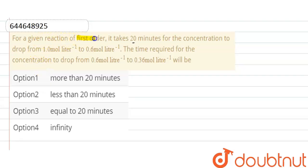Hello everyone, here the question is: For a given reaction of first order, it takes 20 minutes for the concentration to drop from 1 mole per liter to 0.6. The time required for the concentration to drop from 0.6 to 0.36 will be?